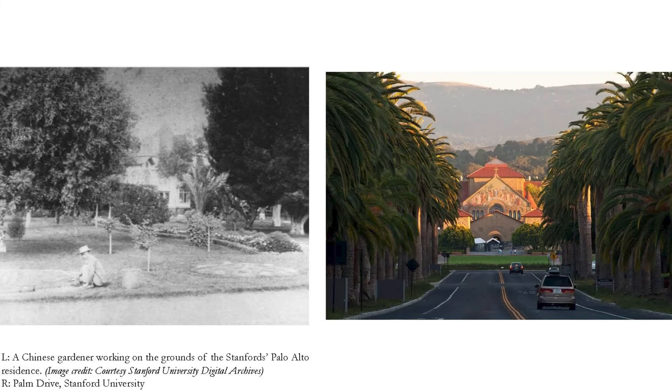Recent archaeological work has uncovered that Chinese laborers actually worked on the Stanford campus — tending the Stanfords' horses on their farm and planting every single palm tree on Palm Drive, the main artery of campus. Their quarters were actually just around the corner from the Cantor. We always talk about this history in relation to Asian American art as a way to draw attention to the fact that Asian American history is, in some ways, the history of Stanford.